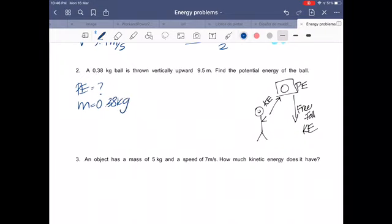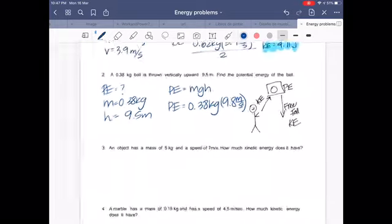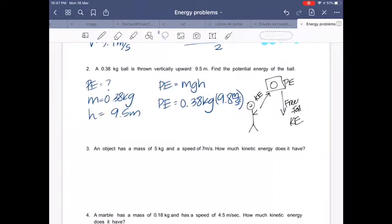So we have potential energy, this one is really easy guys. We have mass times gravity times height. So potential energy equals your mass, which is 0.38 kilograms, then your gravity, that as I said before we have free fall in this one, so that's why we're using gravity.